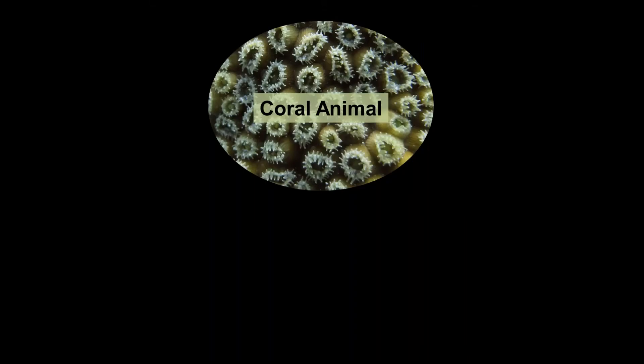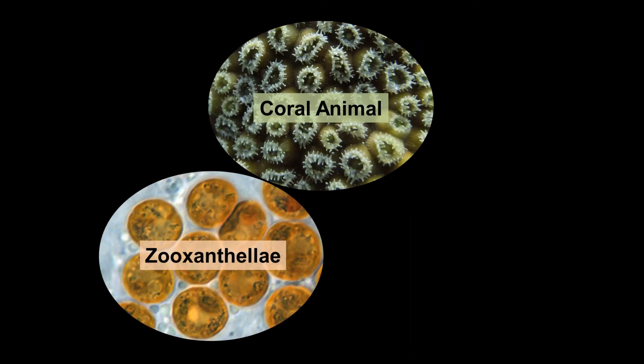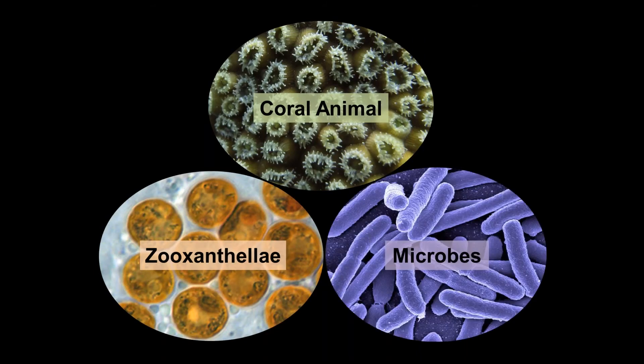There are three main parts to the coral holobiont. First, we have the coral animal. Next, we have the symbiotic dinoflagellates known as zooxanthellae. And finally, we have the microbes, which include bacteria, archaea, viruses, and other microorganisms. Unlike zooxanthellae, we really know very little about this population of symbionts on coral.